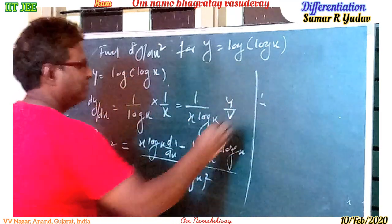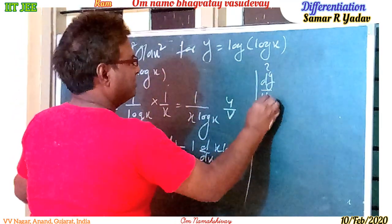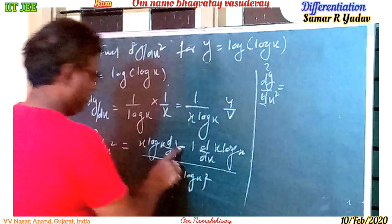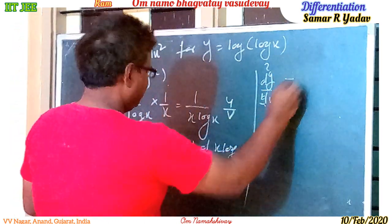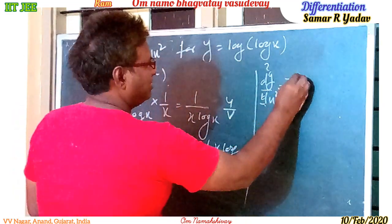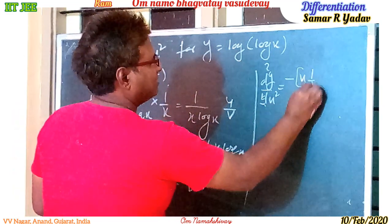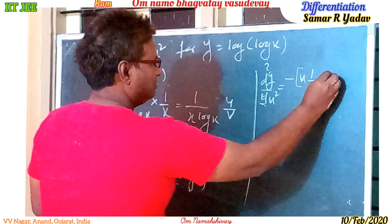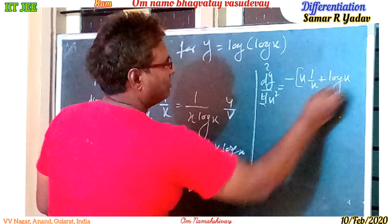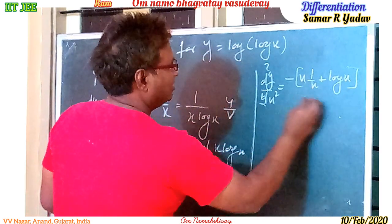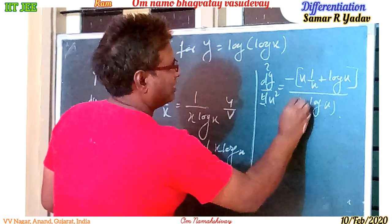So d²y/dx² equals: the derivative of 1 will be 0, so we have minus — x means the constant stays, and the derivative of log x is 1 upon x, plus log x times the derivative of x which is 1 — all upon x log x whole square.